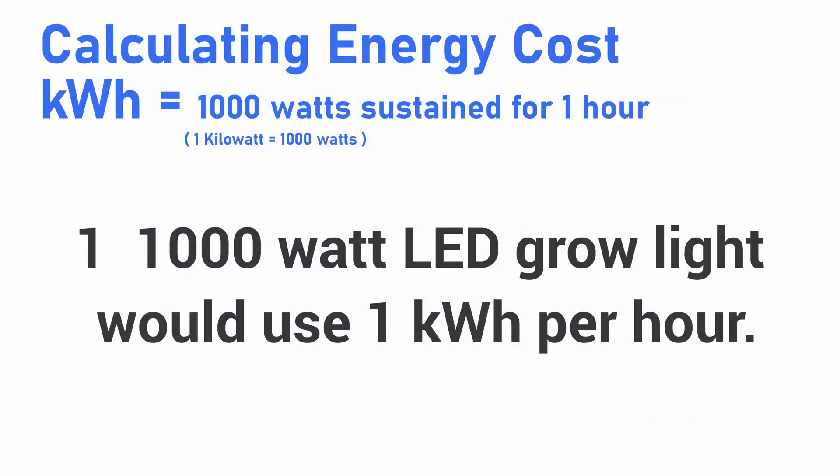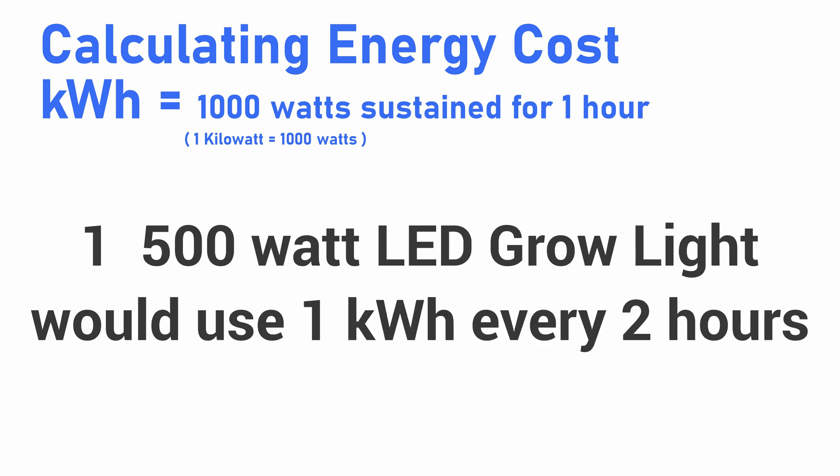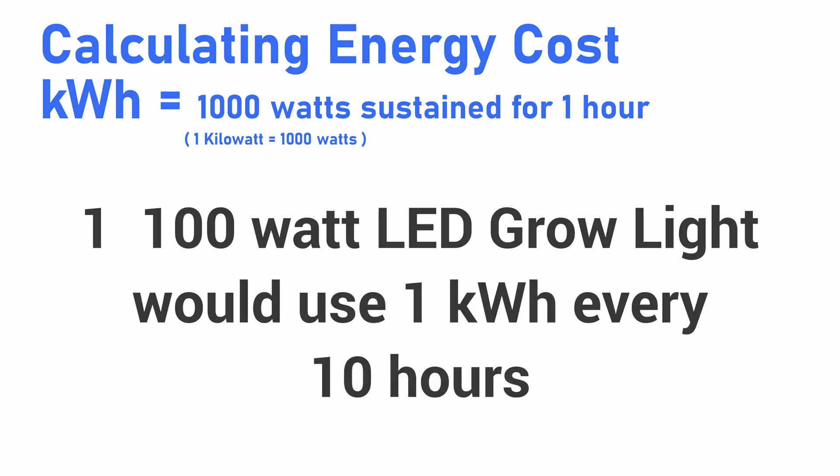Starting really simple: if we were running a 1000 watt grow light for one hour, we would be charged one kilowatt hour, which would be 13 cents. Another simple example is if we were running two 500 watt LED lights at the same time for one hour, we would be charged for one kilowatt hour because the two added up equals 1000. However, if you only had one grow light using 500 watts per hour, it would take two hours to reach your kilowatt hour mark and then you'd be charged 13 cents.